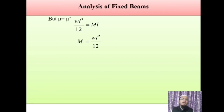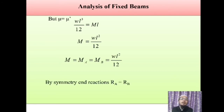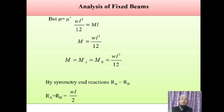Now, what about the reactions? Reactions are equal due to symmetry of loading — UDL is provided over the entire span. So RA = RB. Using summation of vertical forces = 0: RA + RB = total load = W × L. Since RA = RB, we get RA = RB = WL/2. So we have reactions as WL/2 and fixed end moments as WL²/12, and using these values we can draw the bending moment diagram.